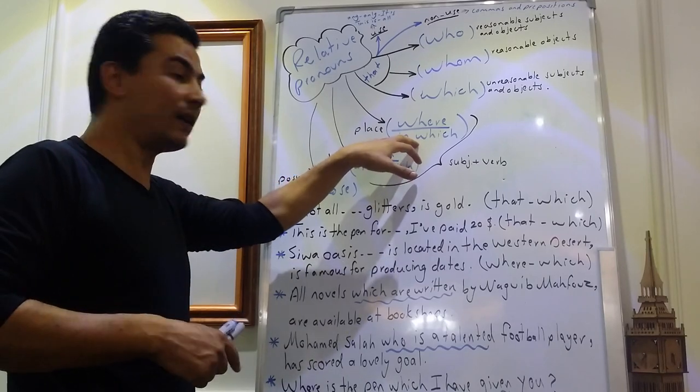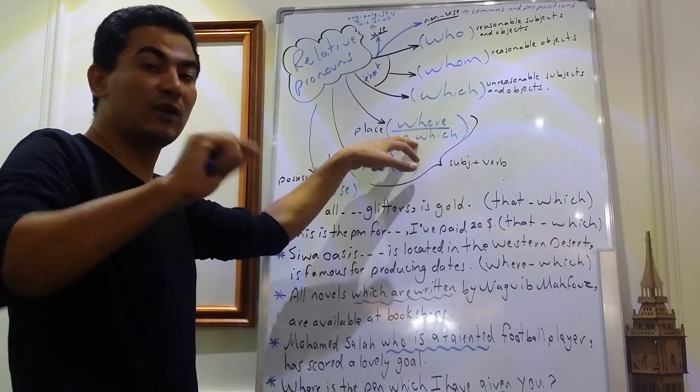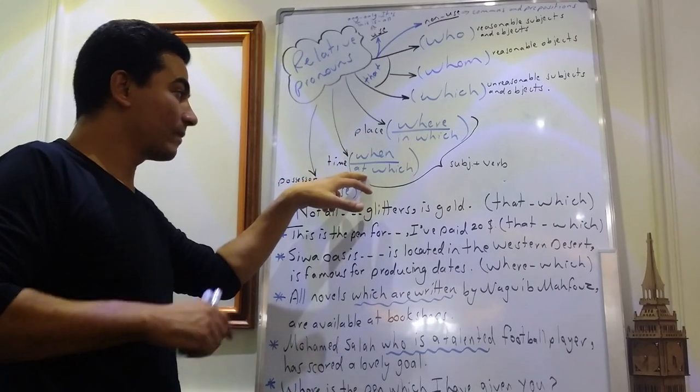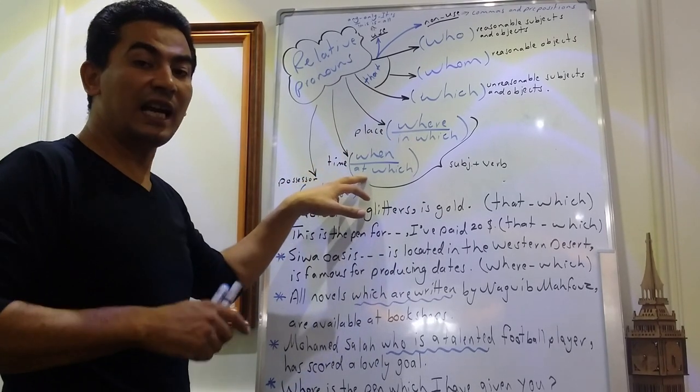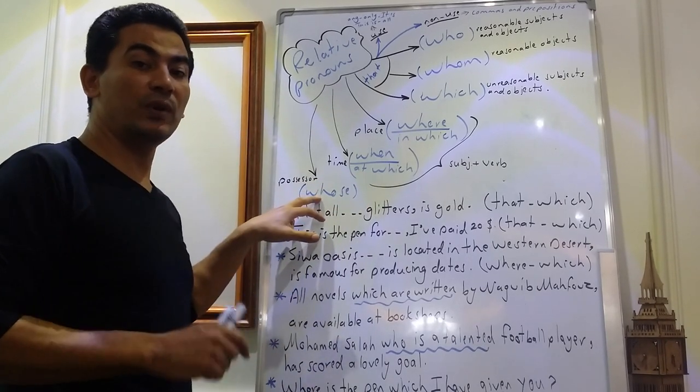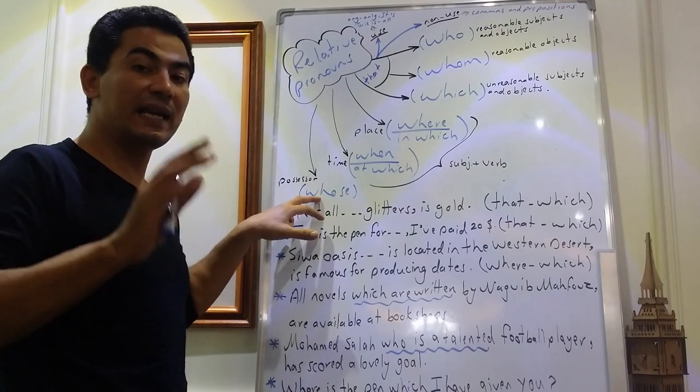Siwa Oasis, where dates are produced, is located in the western desert. When, summer is the time when we go to the beach. Whose, this is the boy whose father works as a doctor.